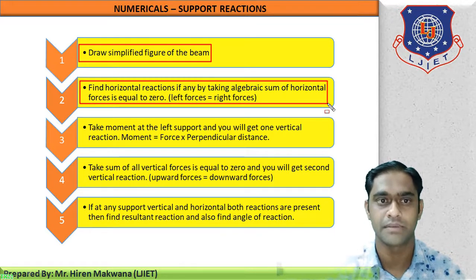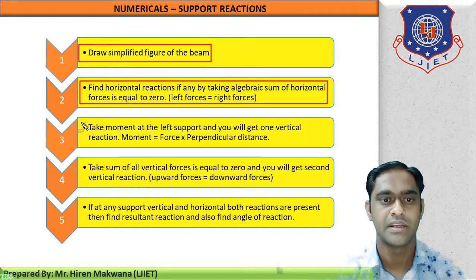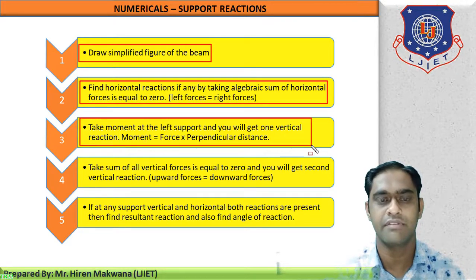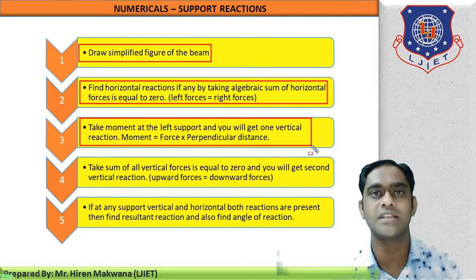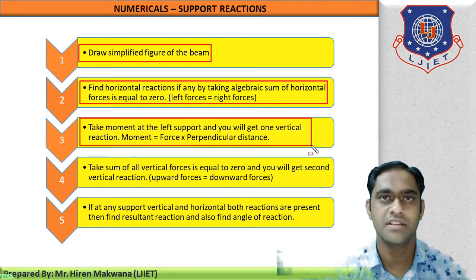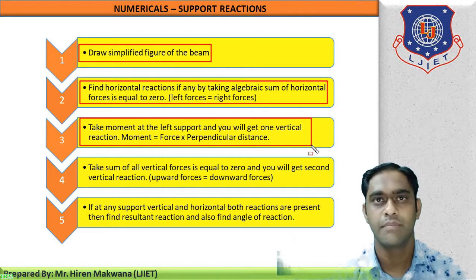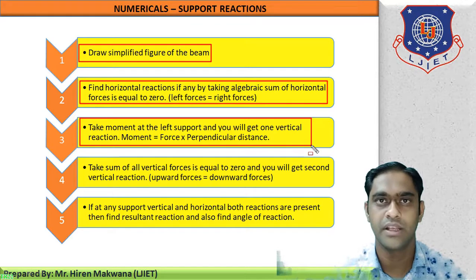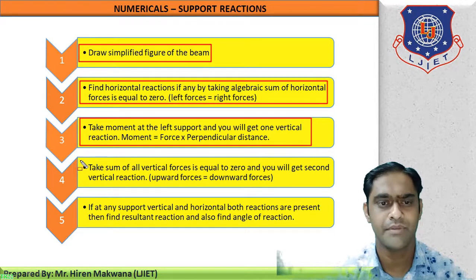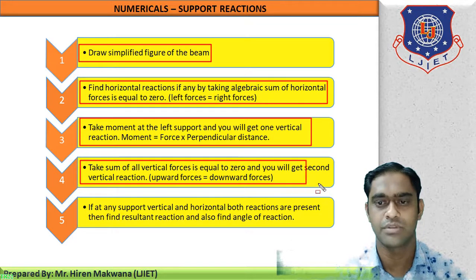Step number three: take moment at the left support of the beam and you will get one vertical reaction. Moment is equal to force into perpendicular distance. By doing step number three, you will get one unknown vertical reaction. Step number four: take the sum of all vertical forces equal to zero and you will get the second vertical reaction.